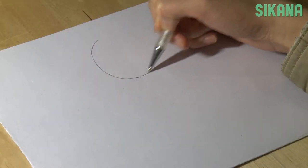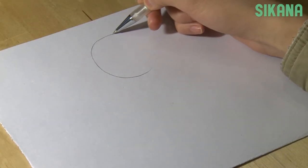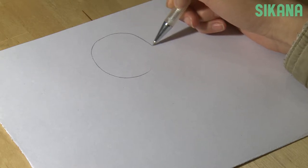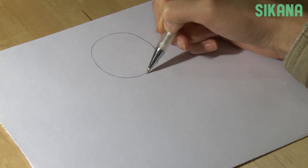First, you must plan out where the shadow will appear. For this tutorial, we're going to use a ball.